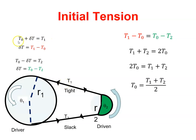So the tension T1 will be our initial tension plus some change in tension. And on the slack side, the tension T2 will be our initial tension minus a little bit. So whatever we add on here, we have to subtract here.